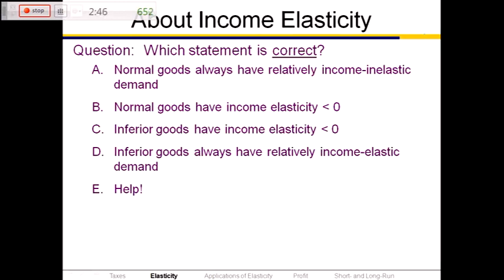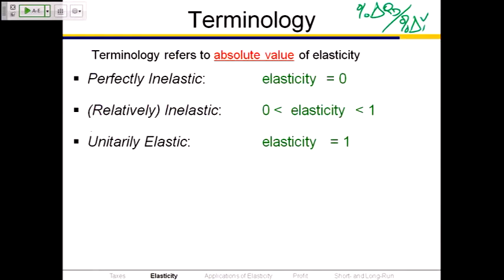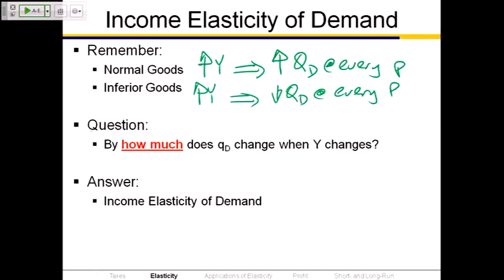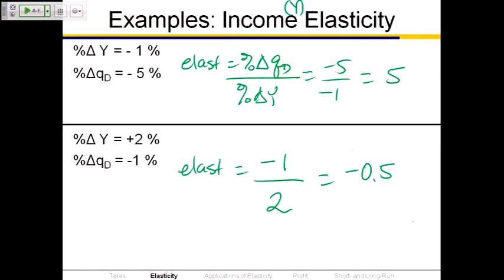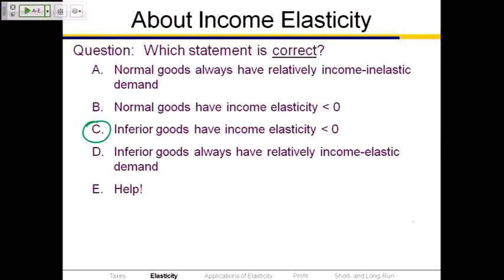Inferior goods: when income goes up, the quantity demanded goes down. Income elasticity is the percentage change in quantity demanded divided by the percentage change in income. If they're going in opposite directions, you have quantity demanded change less than zero when income change is greater than zero — that's a negative number. Which of the two examples was the inferior good? The bottom one, because when income went up, quantity demanded went down. All that mattered was the sign. What makes it inferior or normal is the sign and not the size. Inferior goods have income elasticity less than zero.